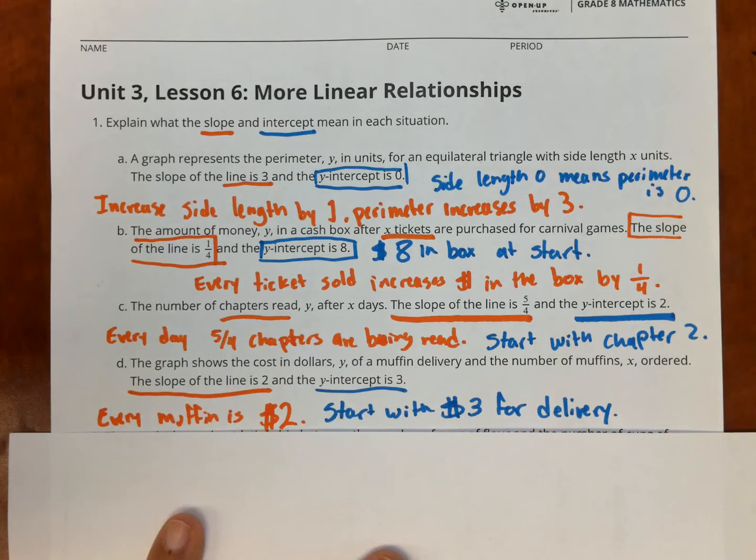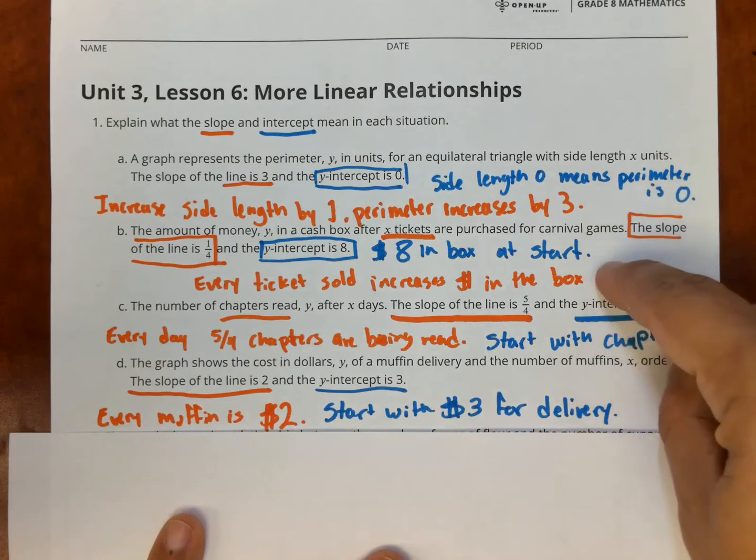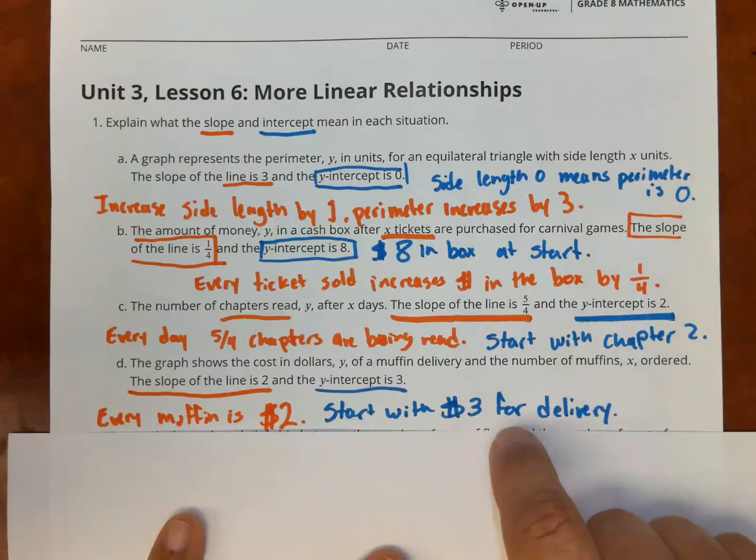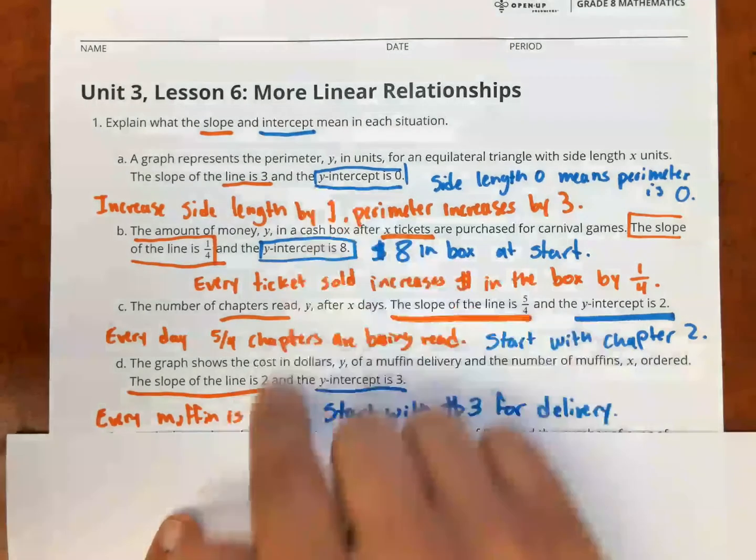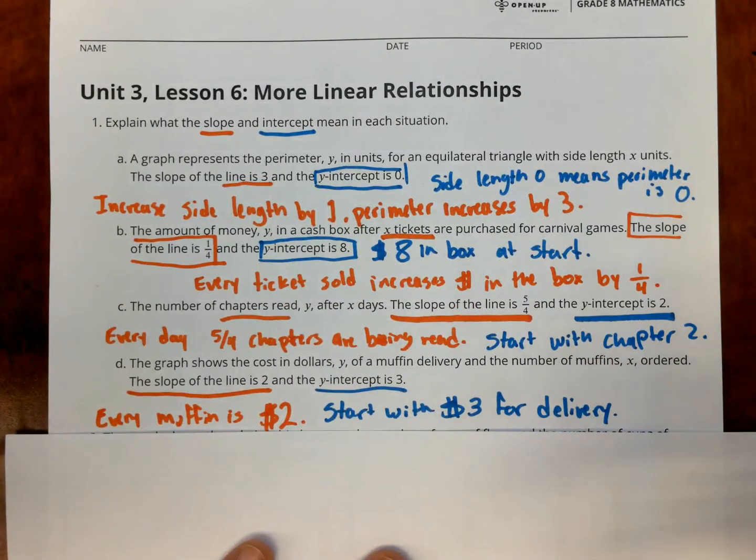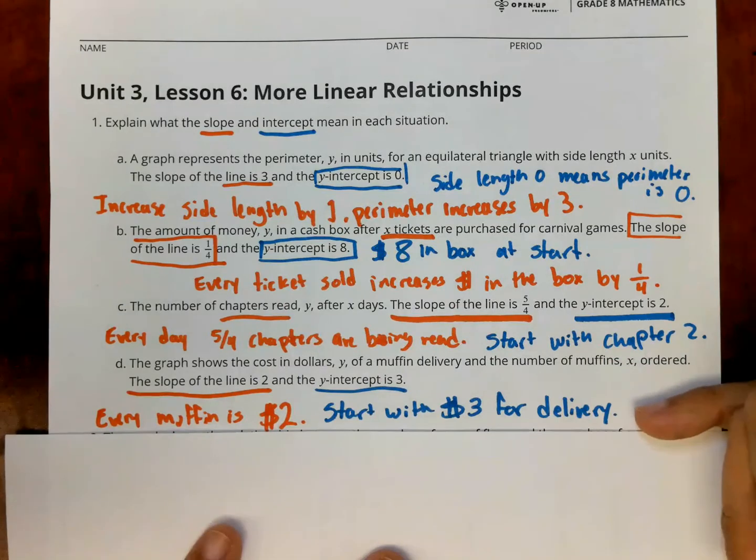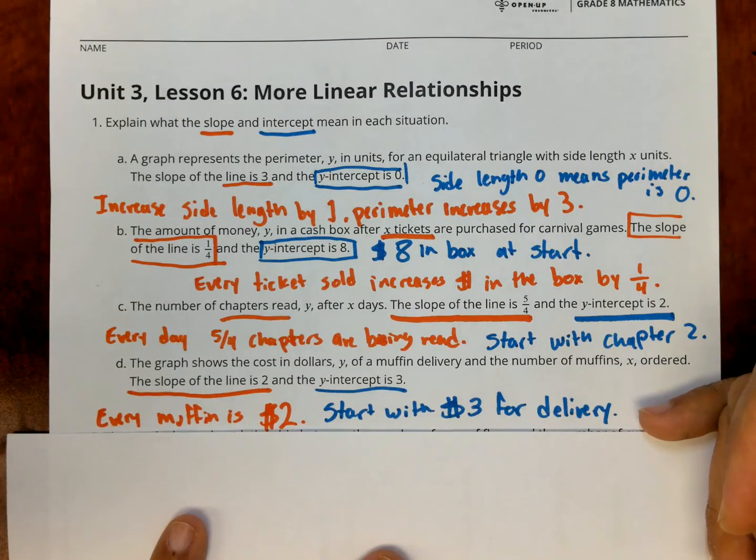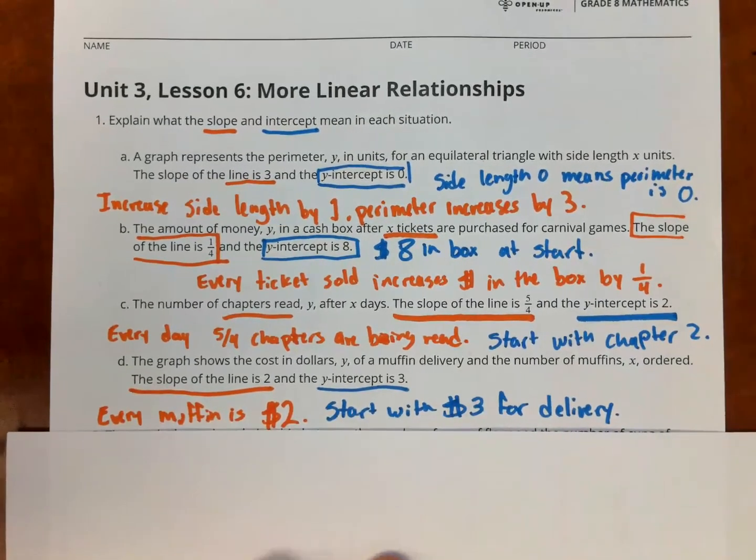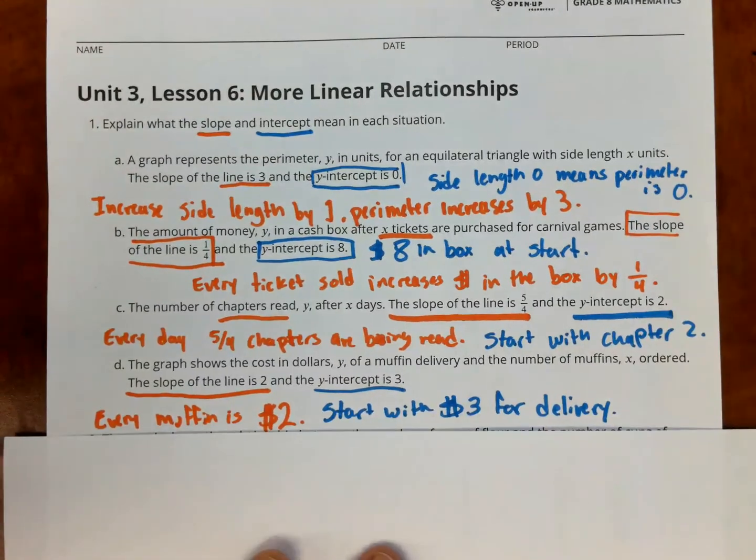For the vertical intercept, notice here you have starting at $0, $8 in the box to start. Start the book with chapter 2. Start with $3 for delivery. So notice that here in the orange, the slope, it's every, that's your rate of change. Things are increasing every time something happens. With the intercept, there are things that are staying the same or you do it just one time, right? Delivery fee one time, you only start reading chapter 2 once. When you start with $8 in the box, that's what you start with. Starting with the perimeter of $0.